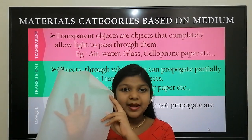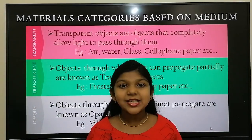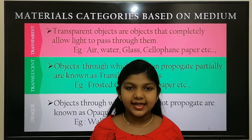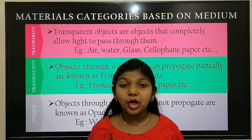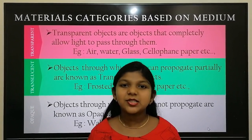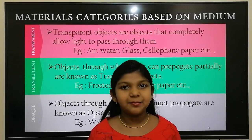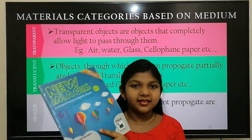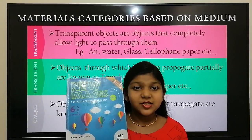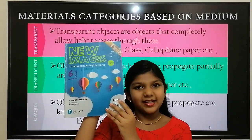This is because the butter paper allows light to partially pass through it. The last one we are going to see is the opaque object or opaque material. The objects that do not allow light to pass through them are known as opaque objects. For example, stone, wall, etc. Here I have taken this book. This book is an opaque object because it does not allow light to pass through it. That is why you cannot see my hand.